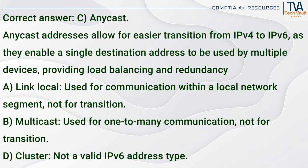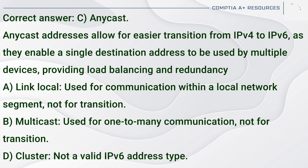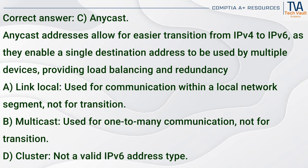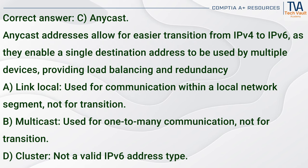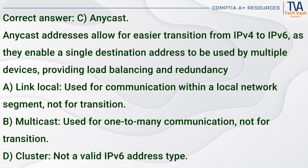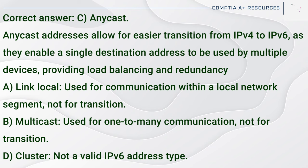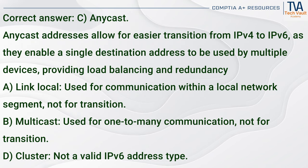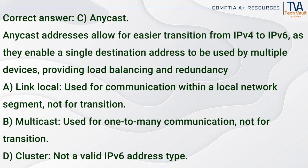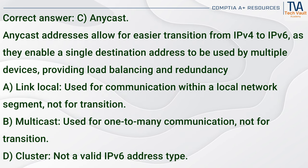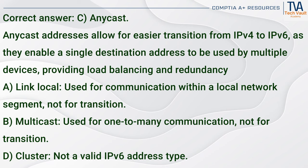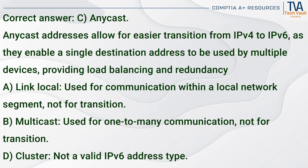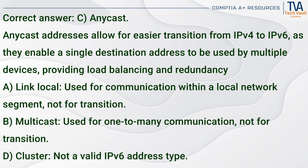Correct answer: C. Anycast. Anycast addresses allow for easier transition from IPv4 to IPv6, as they enable a single destination address to be used by multiple devices, providing load balancing and redundancy. Link local (A) is used for communication within a local network segment, not for transition. Multicast (B) is used for one-to-many communication, not for transition. Cluster (D) is not a valid IPv6 address type.